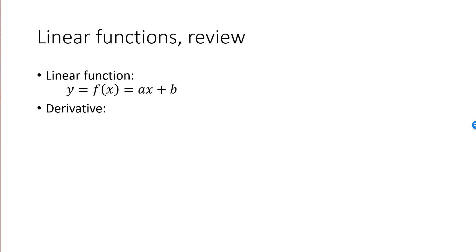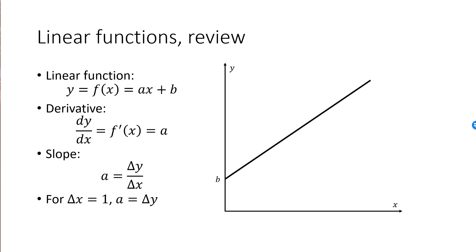The derivative of this function, denoted either by dy/dx or by f prime x, is equal to the slope a. If y is a linear function of x, then the slope can always be calculated from two points on the graph as delta y over delta x, where delta y is the change in y and delta x is the change in x. Specifically, if x changes by one unit, such that delta x is equal to 1, then the slope is simply equal to the change in y, delta y. Since the function is linear, the graph of the function will be a straight line intersecting the y-axis at b.